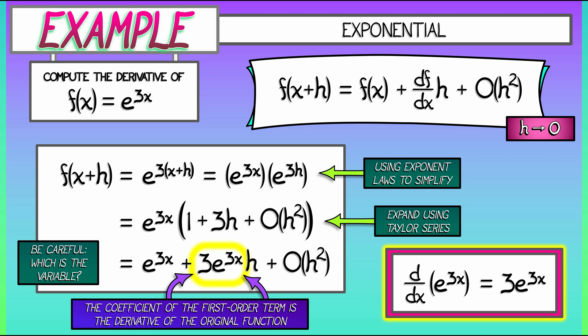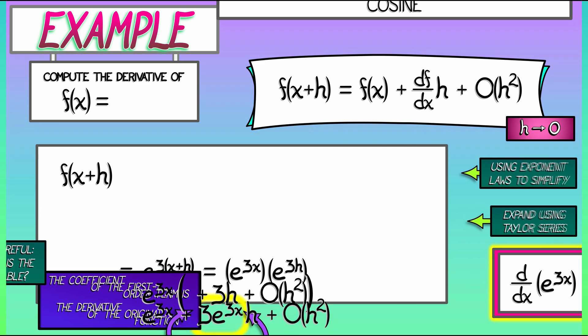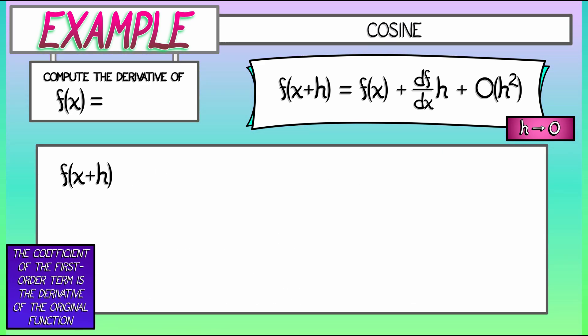Let's practice with another example, this time involving a cosine function, something a little more complicated. Consider f(x) equals cosine of x squared. Let's follow the same procedure to compute the derivative of this. We have f(x+h). That means that x squared now becomes quantity x plus h squared. And I'm looking at the function cosine of quantity x squared plus 2xh plus h squared.